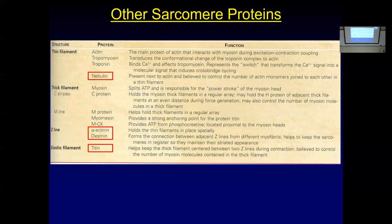There are other proteins to be aware of. Nebulin is a thin filament protein that plays a role in the number of actin monomers joined together. At the Z-line there is desmin and alpha-actinin, and along with titin, these are called structural proteins — they anchor everything at the Z-line and hold each filament in its three-dimensional place. Without them, the muscle would fall apart under load.